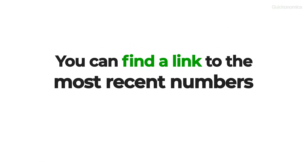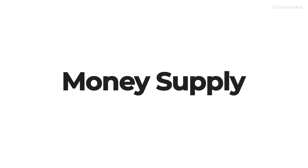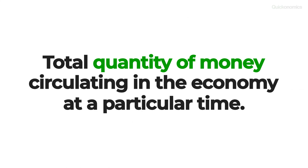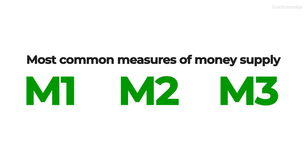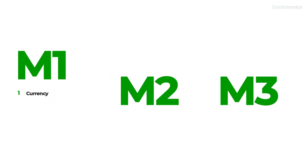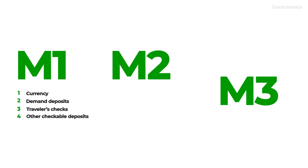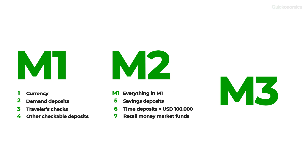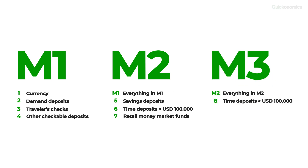You can find a link to the most recent numbers of M1 and M2 in the description below. To sum it up: the money supply is defined as the total quantity of money circulating in the economy at a particular time. M1 includes all currency in circulation, demand deposits, travelers' checks and other checkable deposits. M2 includes everything in M1 as well as savings deposits, time deposits below $100,000 and retail money market funds. M3 includes everything in M2 as well as time deposits larger than $100,000, institutional money market funds and term repurchase agreements.